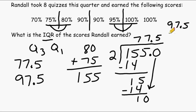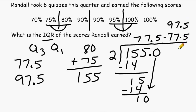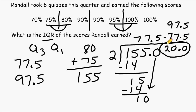To find the IQR, we take Q3 and subtract Q1 from it: 97.5 minus 77.5. Five take away five is zero, seven take away seven is zero, and nine take away seven is two. So the IQR of the given data set is 20.